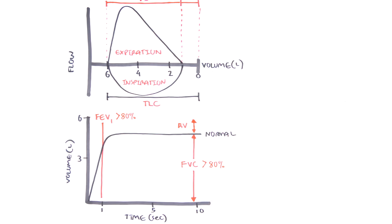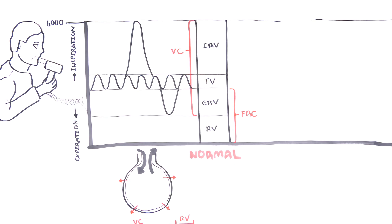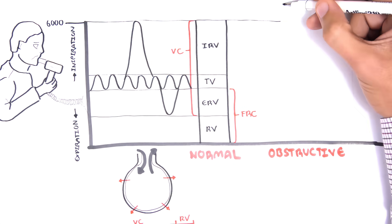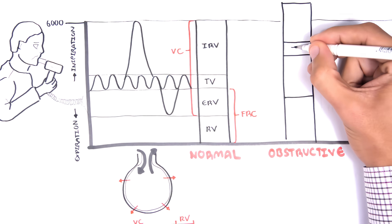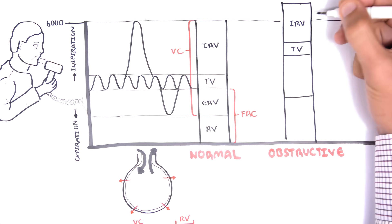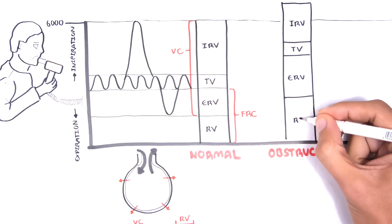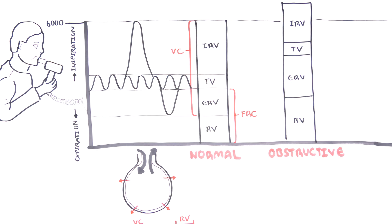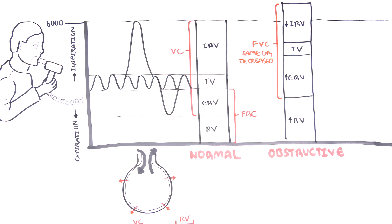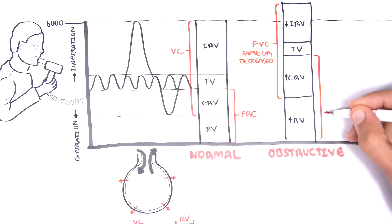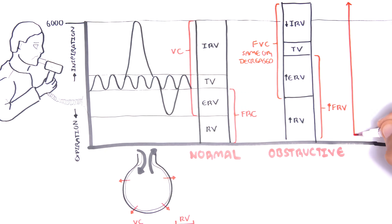Now let's look at what happens in COPD, where we have gas trapping and obstruction of the airways. In obstructive airway disease, we can see an increase in total lung capacity — this is why it is common to see features of an enlarged chest in COPD patients. The tidal volume remains the same; however, the inspiratory reserve volume decreases, the expiratory reserve volume increases, and the residual volume increases as well. Thus the forced vital capacity is the same or may be decreased, the functional residual capacity is increased, and the total lung capacity altogether increases.